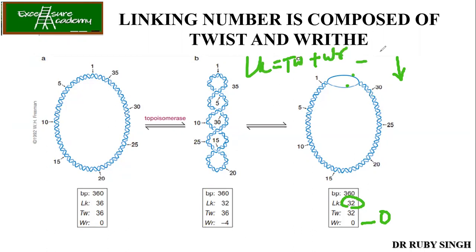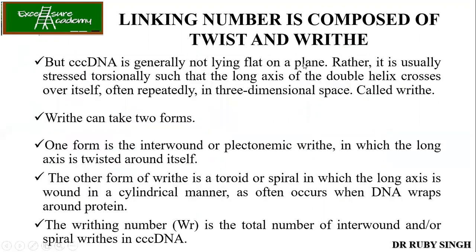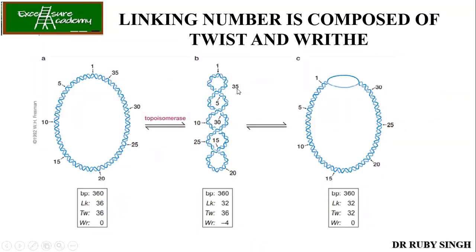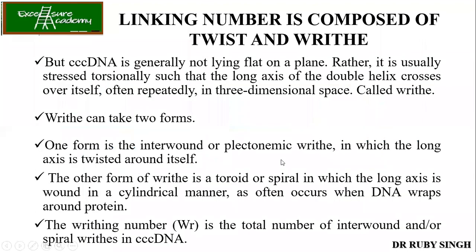If writhe is negative, it means left-handed; if positive, it means right-handed. CCC DNA is generally not lying flat on a plane. Rather, it is usually stressed torsionally along its long axis. Because of the cytoplasm or nucleoplasm in which DNA molecules are present, they are always in this compacted form — you never see a plasmid rotating flat like that.